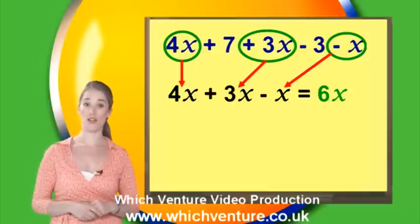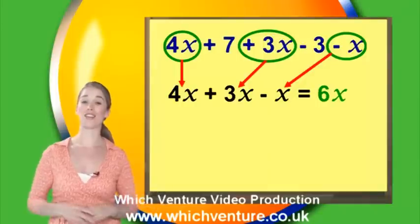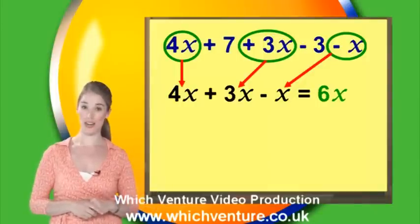And then I considered the other parts, which are both just numbers. Obviously we can combine these together, and that gives us 7 minus 3, which is 4.